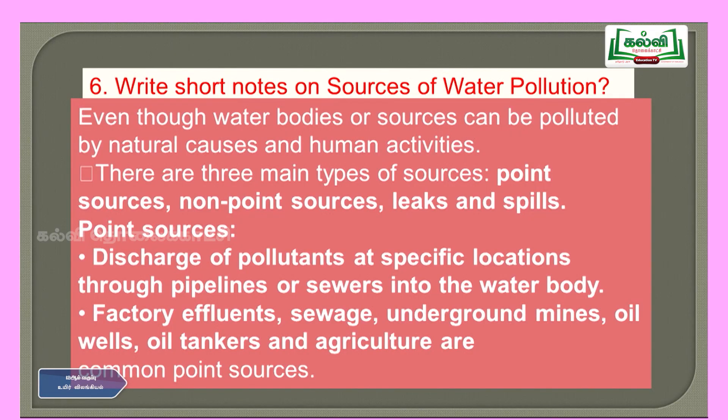Sixth question: write short notes on sources of water pollution. Even though water bodies can be polluted by natural causes and human activities, there are three main types of sources: point sources, non-point sources, and leaks and spills. Point sources are discharge of pollutants at specific locations through pipelines or sewers. Factory effluents, sewage, underground mines, oil wells, oil tankers and agriculture are common point sources.